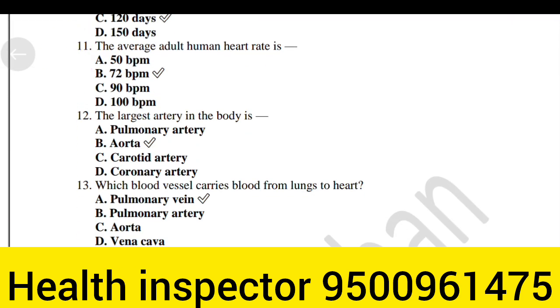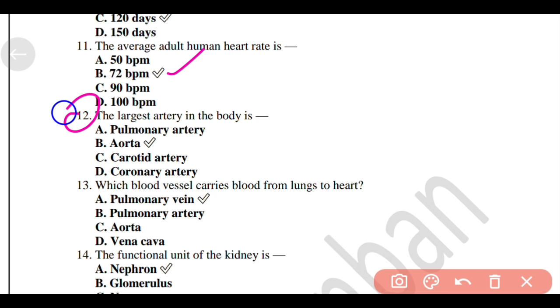The average adult human heart rate is 72 BPM. The largest artery in body is Option B, Aorta.